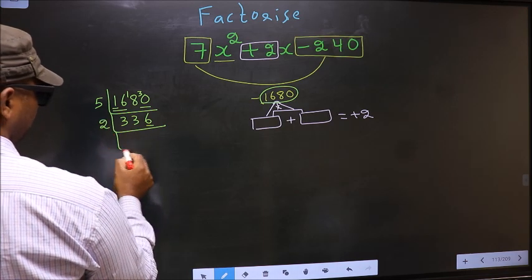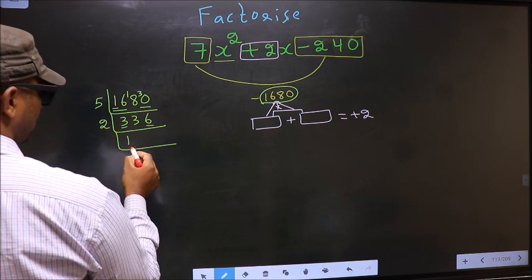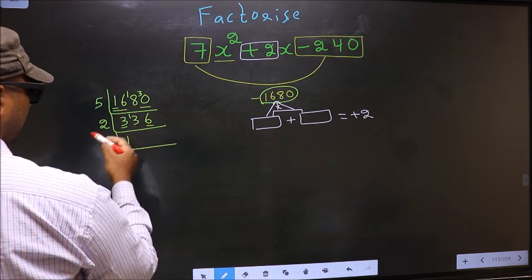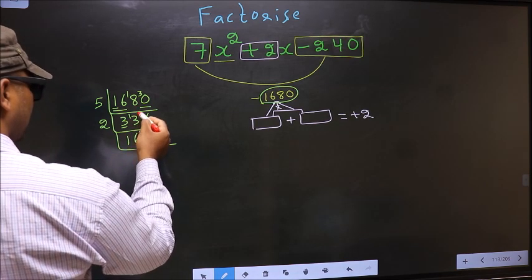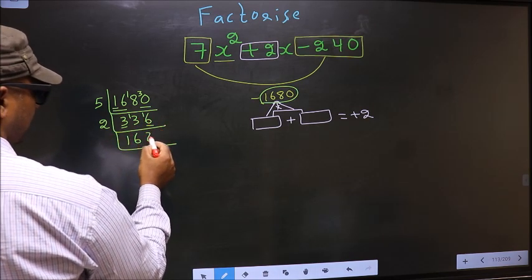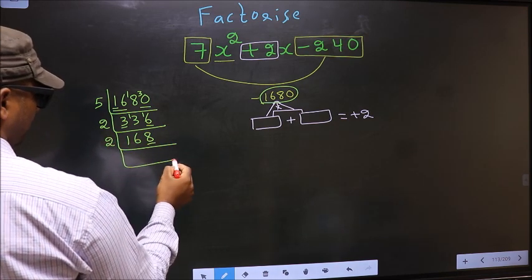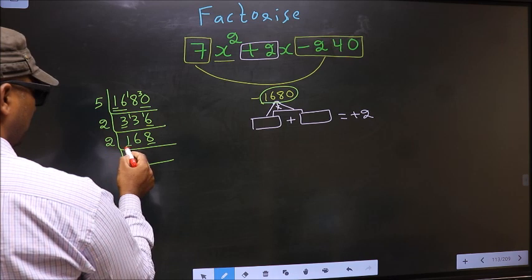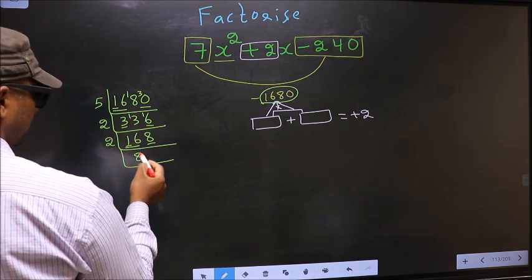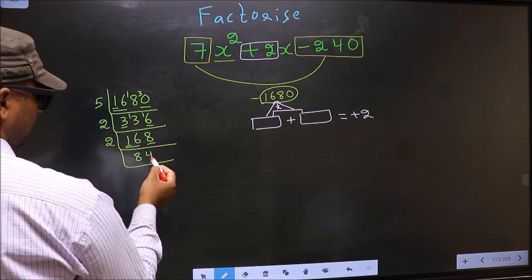Even, so take 2. First number 3, a number close to 3 in 2 table is 2×1 = 2. 3 minus 2 is 1, carried forward making it 13. A number close to 13 in 2 table is 2×6 = 12. 13 minus 12 is 1, carried forward making it 16. When do we get 16 in 2 table? 2×8 = 16. Now last digit 8, even, so take 2. First number 1, smaller than 2, so take 2 number 16. When do we get 16 in 2 table? 2×8 = 16. The other number 8, when do we get 8 in 2 table? 2×4 = 8. Now last digit 4, even, so take 2.